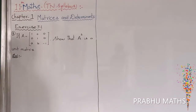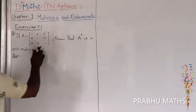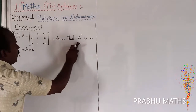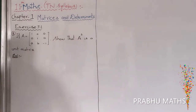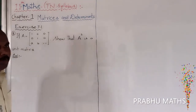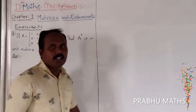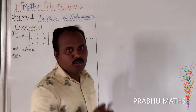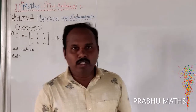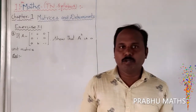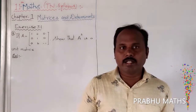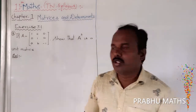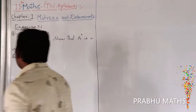If A is equal to the 3 by 3 matrix, show that A squared is a unit matrix. The unit matrix means the main diagonal should be 1 — that is called the unit matrix — and the upper triangle and lower triangle elements are going to 0.